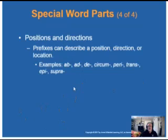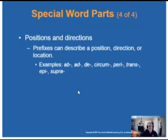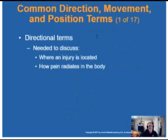More prefixes: ab as in abduction means away; circumferential means going all the way around; epi means toward the surface; supra means above, as in supra-ventricular — above the ventricles, which would be the atria of the heart. Those are supra-ventricular chambers.